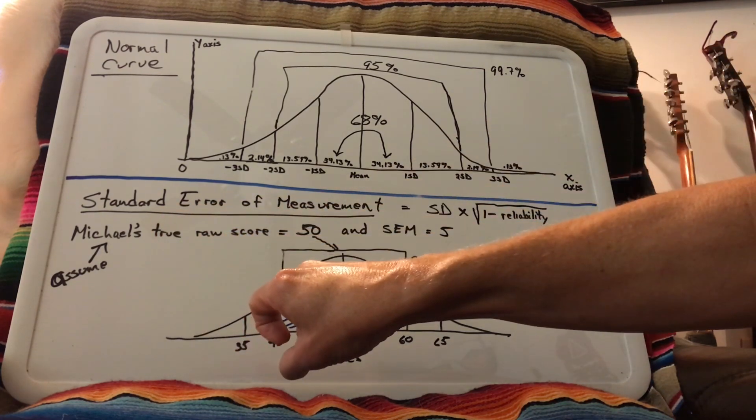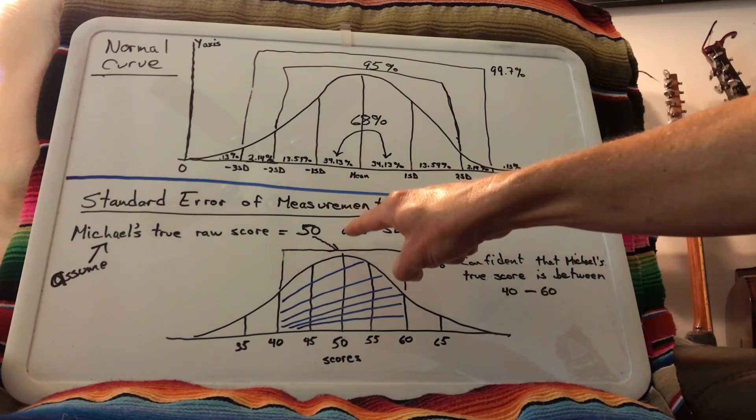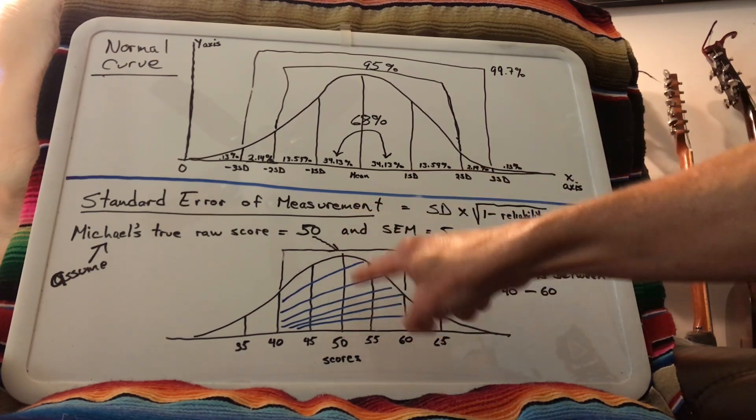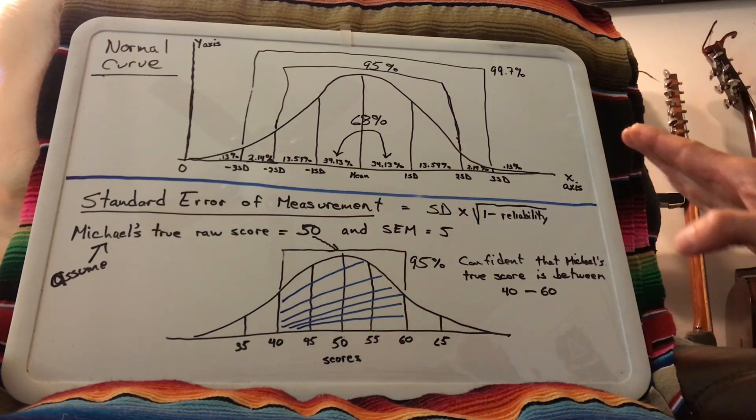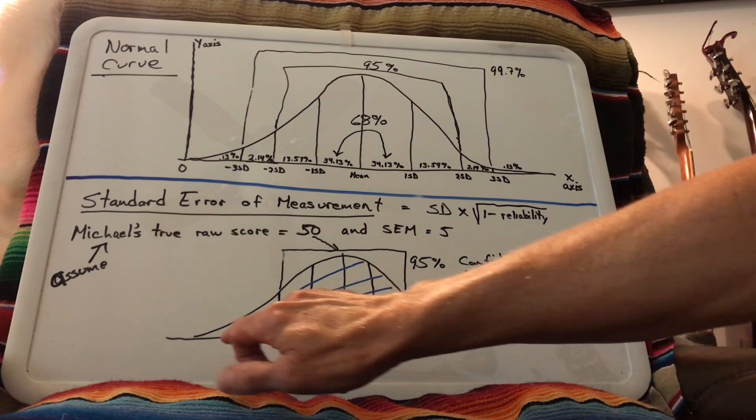So Michael took a test and his true raw score was 50. We're going to plot that right dead in the center, as if that's the mean. That's his true raw score. And then we're going to assume if he took this an infinite number of times, the same test an infinite number of times, that his scores will approximate a normal curve.